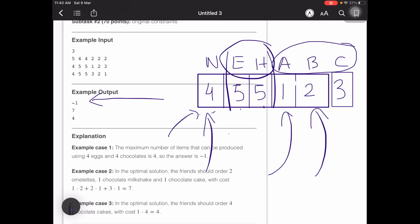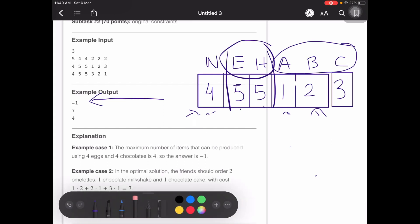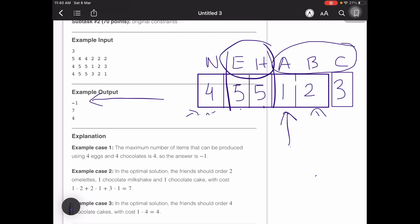To find the optimum solution: since A, which is the cost of omelets, is the minimum, we try to buy 2 of them. Each omelet takes 2 eggs. We have 5 eggs, so 5 minus 2 times 2, we now have 1 egg remaining and we have already ordered 2 items, that is 2 omelets.